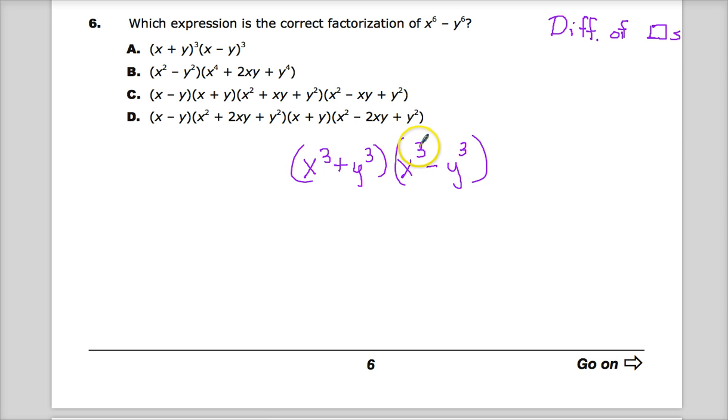Because if you do x to the third times x to the third, you get x to the sixth. And if you do this times this, it'll be canceled out. The middle terms end up canceling out. If you do x to the third times negative y to the third, you'll get negative x to the third y to the third plus, because when I do it under here, same thing. So having those opposite signs actually cancel that middle term out. So I just end up with x to the sixth and y to the sixth. That's the first step.